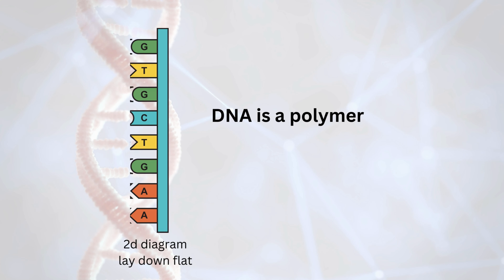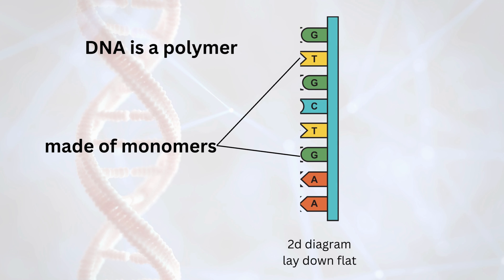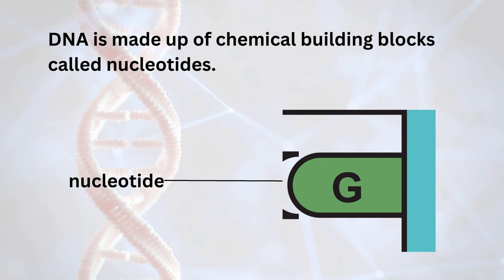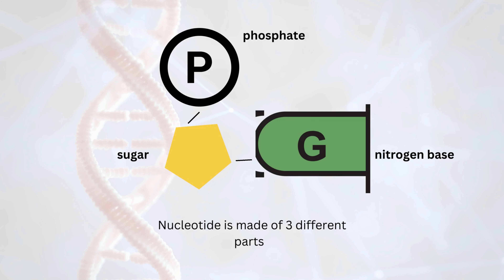DNA is a polymer. A polymer is made up of a number of joined together monomers. DNA is made up of chemical building blocks called nucleotides. Each nucleotide consists of three smaller parts linked together.